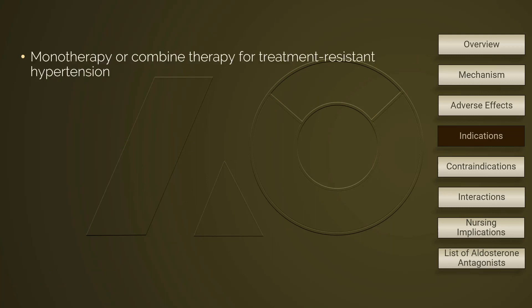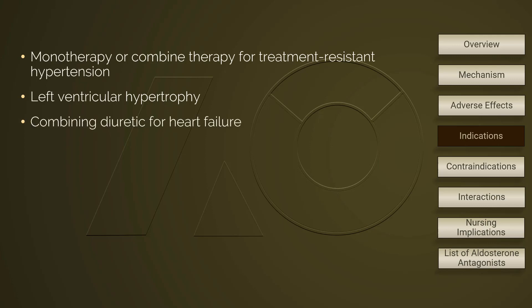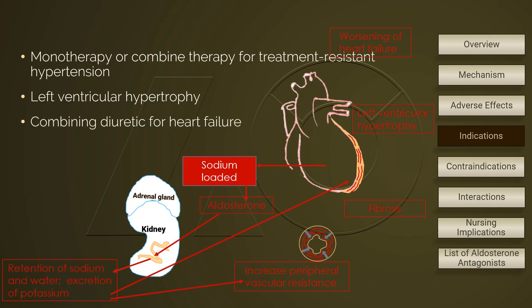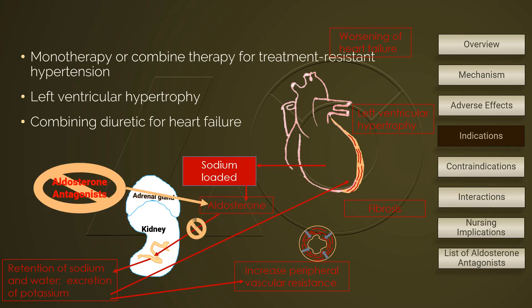Aldosterone antagonists are now an add-on medication to treat resistant hypertension. The effects of spironolactone are evident in weeks and last for months, with no discrimination on ethnicity. The second indication for aldosterone antagonists is left ventricular hypertrophy. A combination with diuretics can be used for patients who have heart failure. An aldosterone antagonist can offset the pathological response of worsening heart failure driven by aldosterone.